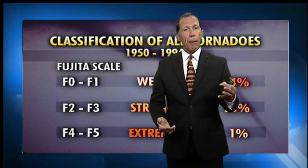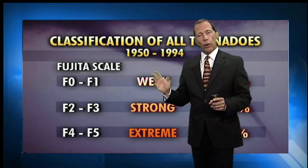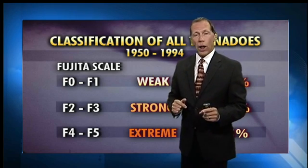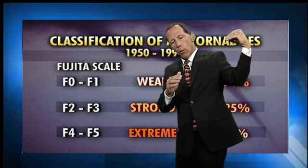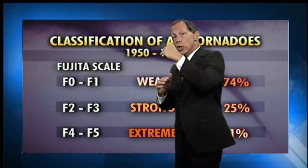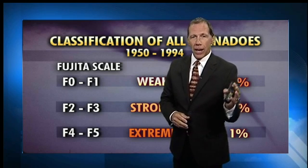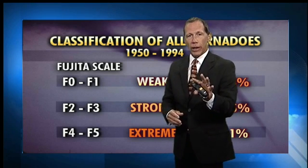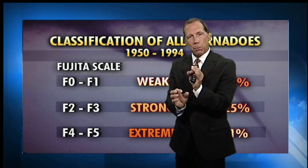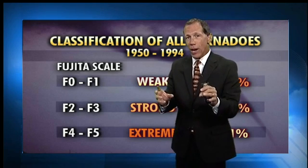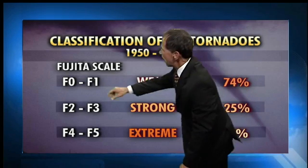Idaho averages three tornadoes per year. There have been times I remember nine of them occurring. Most of them occur from the Magic Valley eastward, but there was one — not a tornado, but a funnel cloud, which is a tornado not reaching the ground — that went right over Boise in June several years ago. Some big pictures of that came in. Generally, you just tend to not get tornadoes in a specific spot; they can occur anywhere, but it's hard to get one in a specific spot like Boise.